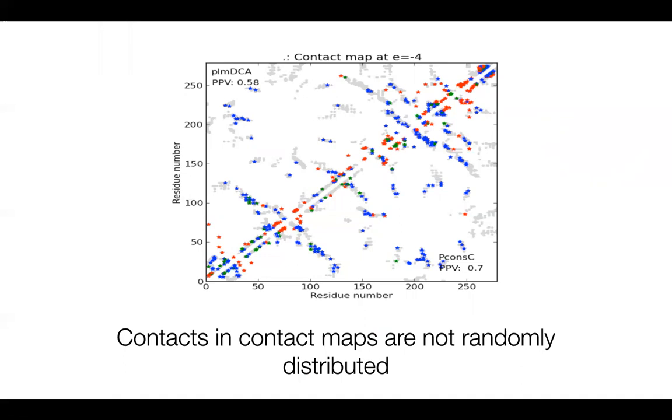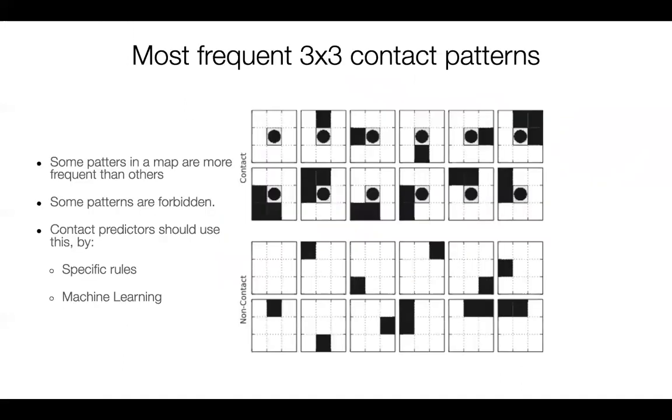So if you just consider the most simple patterns, you look at the three by three part of this map. So here you have just some part of this matrix that is three by three, the rest is I, I minus one, I plus one, and J, J minus one, and J plus one. And then you can divide these into two groups. Either you have a contact in the middle, or you do not have a contact in the middle.